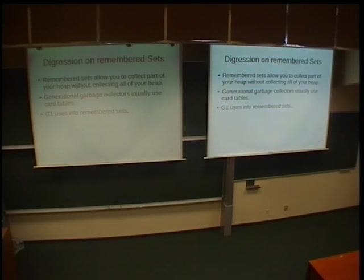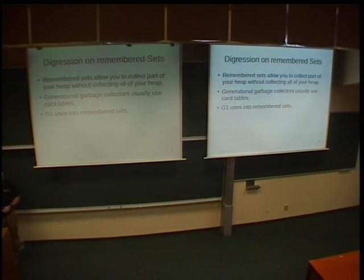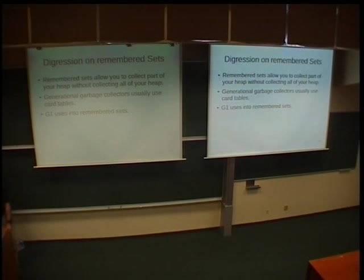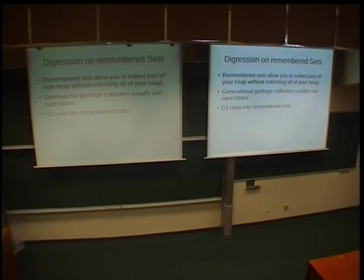Remembered sets: what are they? The problem with classical generational garbage collectors is that when you move some object in the younger generation, you need to keep track of other objects in the old generation that could reference it. This is the main problem for most generational garbage collectors — they need to synchronize young generation objects with the old generation. Classical generational GCs use card tables, and Garbage First (G1) uses remembered sets — sets of pointers pointing to some region of the old generation.